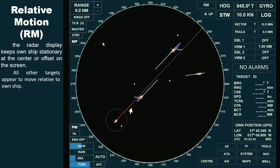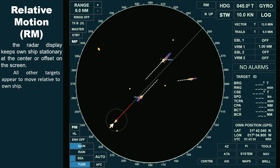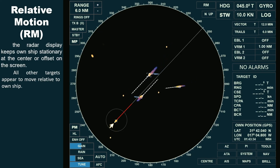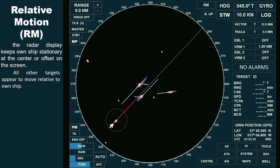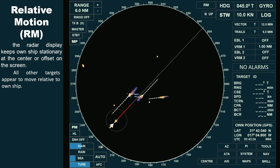Let's observe how objects move on the radar screen in relative motion display. You'll notice that own ship remains stationary, while other vessels and stationary objects appear to move around her, reflecting their speed and direction relative to own ship's position. However, the vessel ahead appears fixed on the screen because she has the same course and speed as own ship.